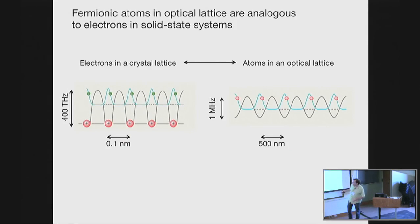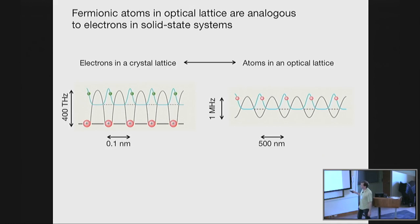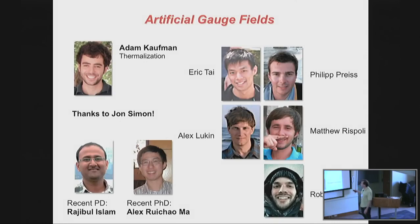In a bigger picture, we really want to create synthetic matter — a model system for understanding condensed matter ideas. The analogy is that our atoms in the optical lattice can be viewed as a model of what electrons might do in a crystal structure. There are bosonic atoms and fermionic atoms; I'll be talking about bosonic atoms in the first part of the talk. It's a much bigger spacing so we can see them individually and control them.